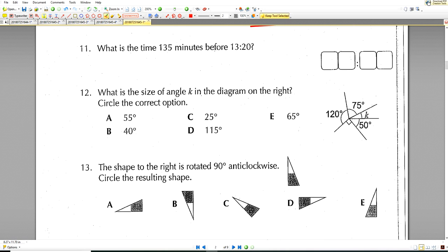What is the time 135 minutes before 13.20? So in 135 minutes, you have 120 minutes, which is 2 hours. And then you have another 15 minutes left over. So you have to minus 2 hours and 15 minutes. So 13.20 minus 2.15. You'll have 5 minutes left over. And 13.20 will be 11. So it'll be 11.05. Next question.